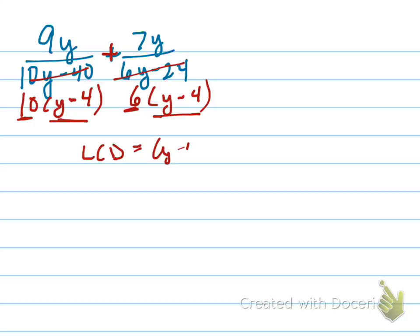And I need to, what am I missing from this? I'm missing a 3, and what am I missing from this? If I have a 2 and a y minus 4, I'm missing a 5. So in total your LCD is 30 times y minus 4.